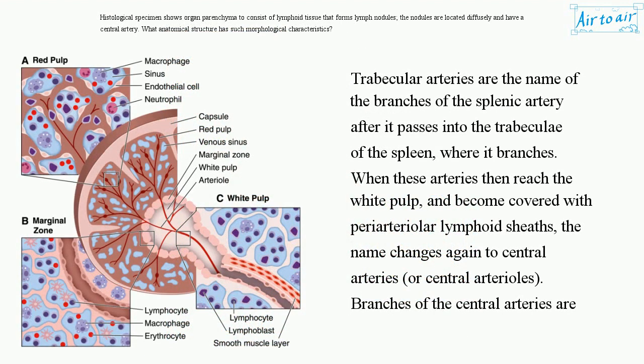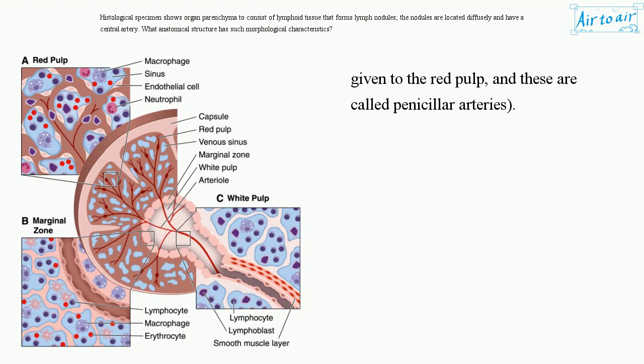Trabecular arteries are the branches of the splenic artery after it passes into the trabeculae of the spleen, where it branches. When these arteries reach the white pulp and become covered with periarterial lymphoid sheaths, the name changes to central arteries, or central arterioles. Branches of the central arteries given to the red pulp are called penicillar arteries.